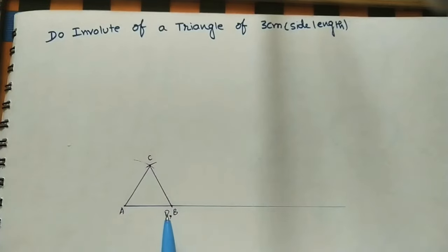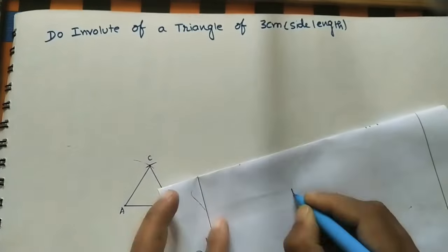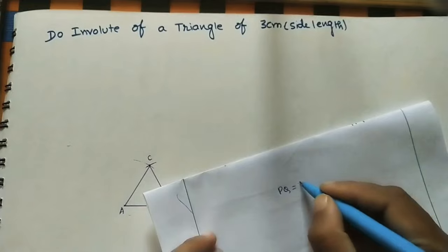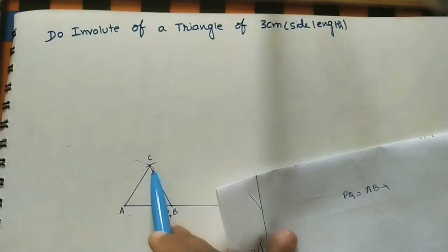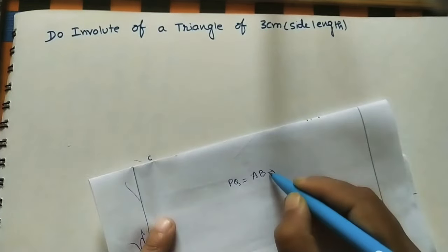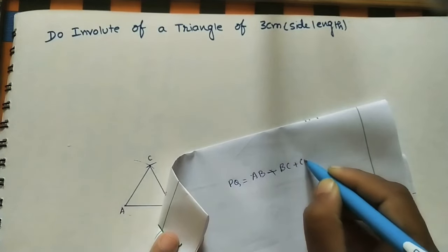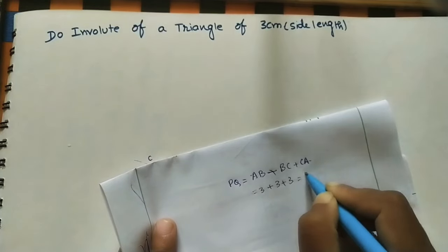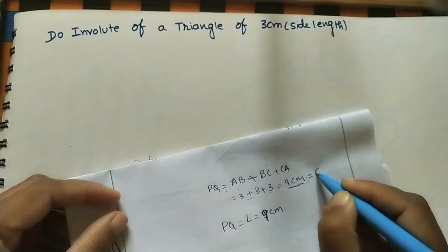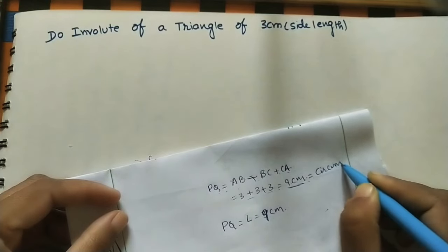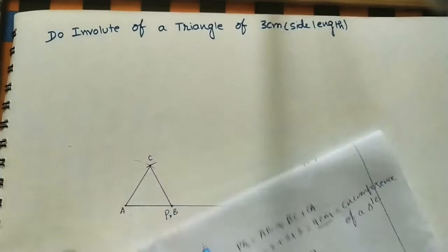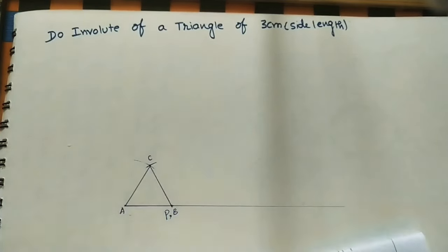On this line mark PQ length. PQ length is equal to the circumference of this triangle: AB plus BC plus CA. Each side is 3cm, so 3 plus 3 plus 3 equals 9cm, which is the circumference of the triangle.